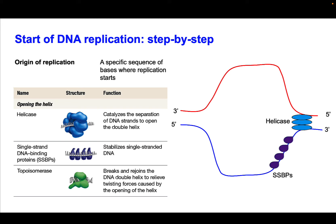The next proteins to assemble at the replication fork are the single-stranded DNA binding proteins, shown here in purple. These bind and prevent the DNA from snapping back and reforming into a double helix. We abbreviate these as SSBPs. That's an important step to keep the DNA unwound until we can start copying it.